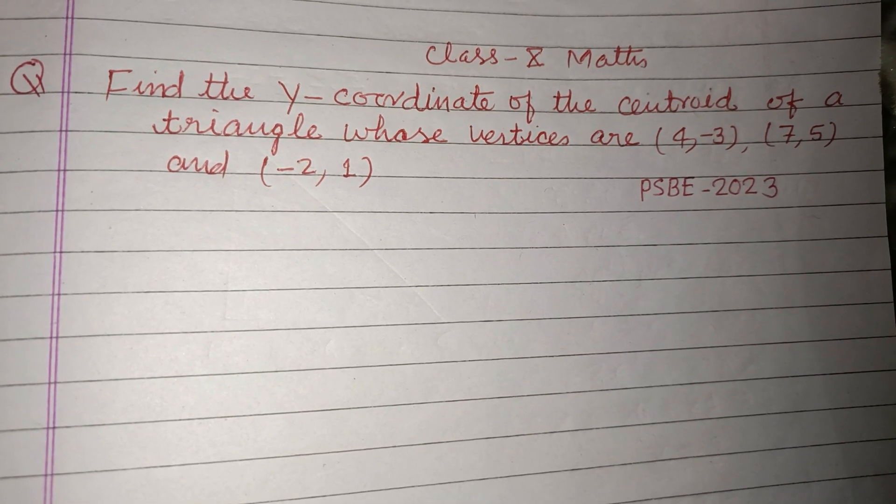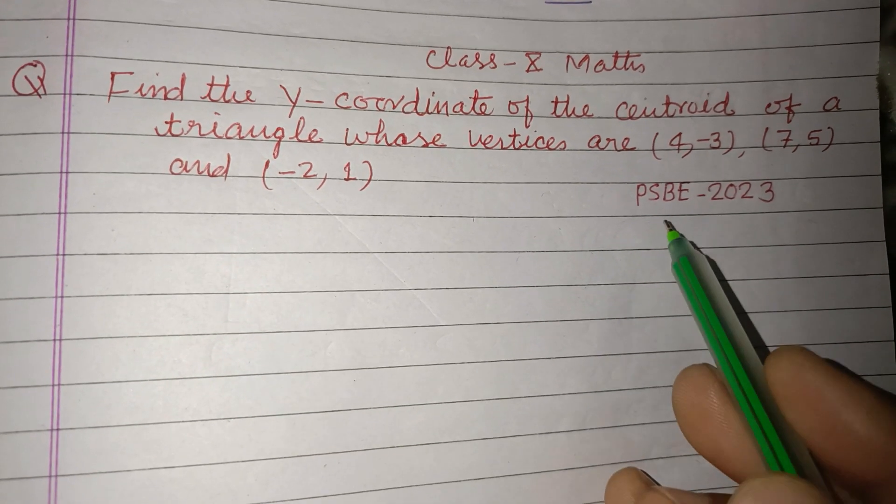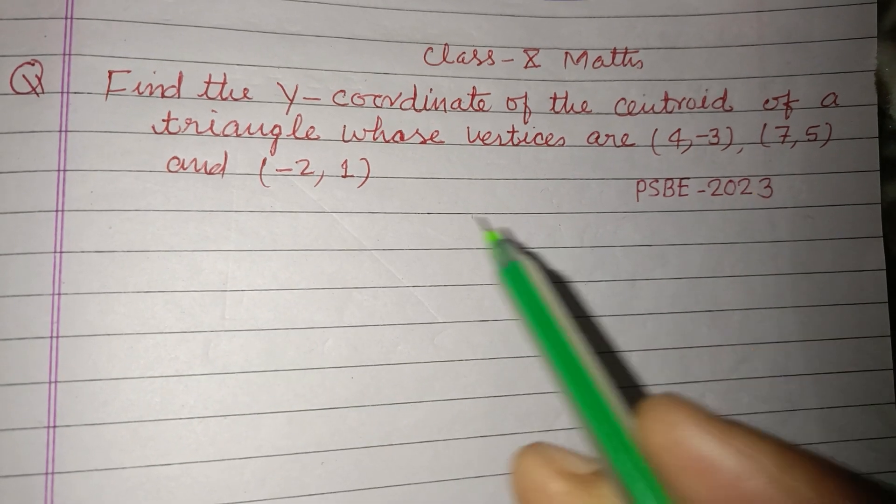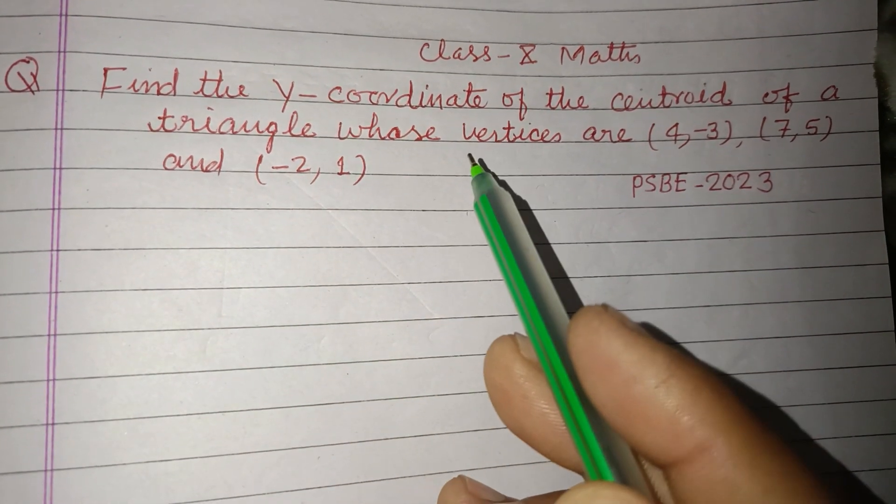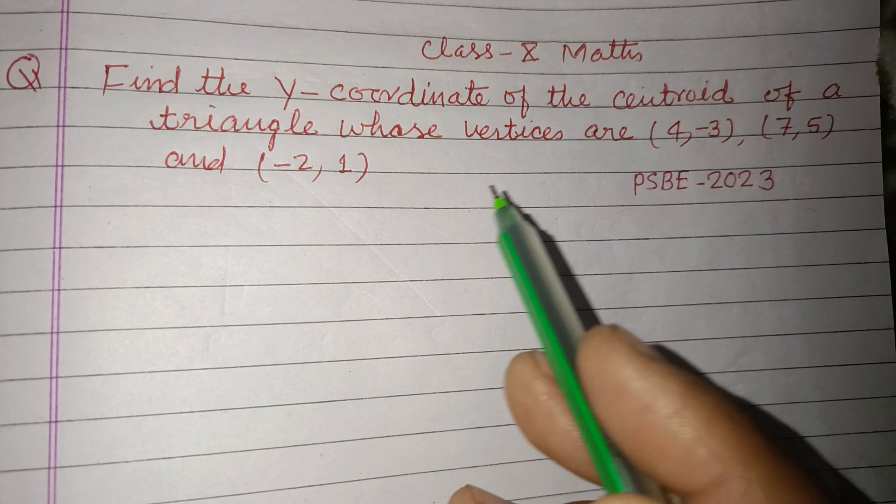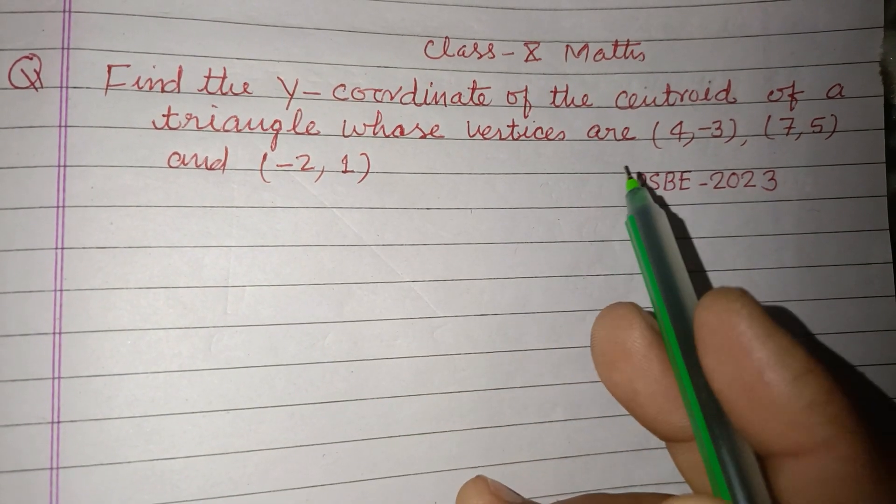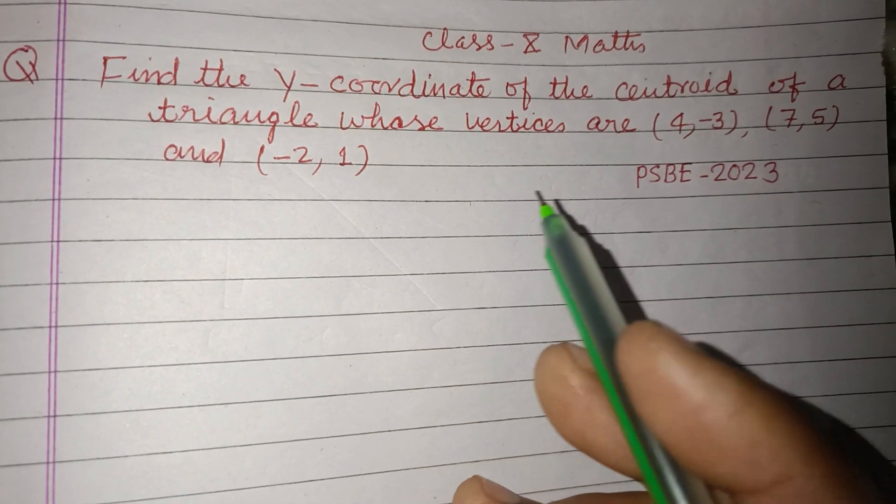Hello viewers, welcome to this YouTube channel. This is a question from Punjab State Board Exam 2023. Find the y-coordinate of the centroid of a triangle whose vertices are (4, -3), (7, 5)